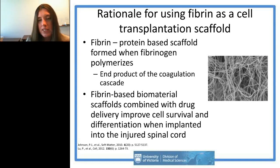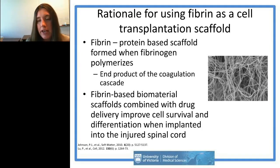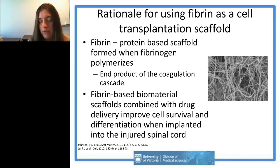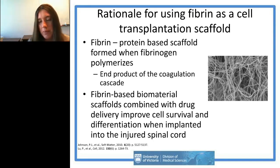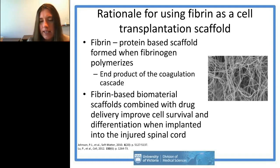The 3D scaffolds we seeded these cells into are made from fibrin — the end product of the coagulation cascade, formed when fibrinogen polymerizes. This scanning electron microscopy photo shows the long protein fibrils. Surgeons use it commercially as a surgical sealant, and cells really like to grow in it. You can also modify fibrin into drug delivery systems.